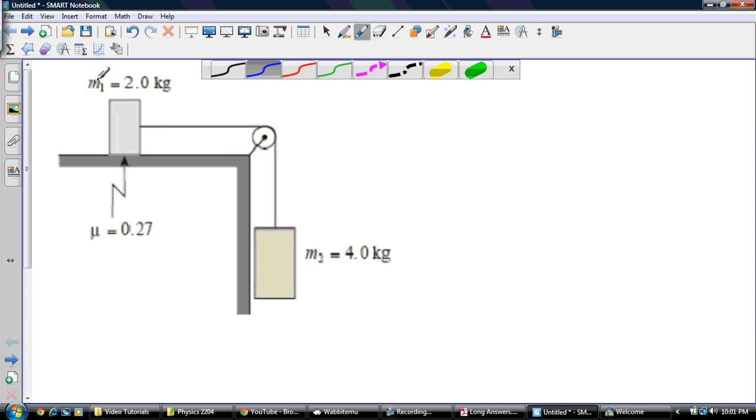So what we have going on here is we have a mass of 2 kilograms sitting on a table and a pulley, and then a mass of 4 kilograms here on the string, and a coefficient of static friction of 0.27 acting on this thing. So the first thing we might want to do is find the force of gravity and the frictional force acting on this thing.